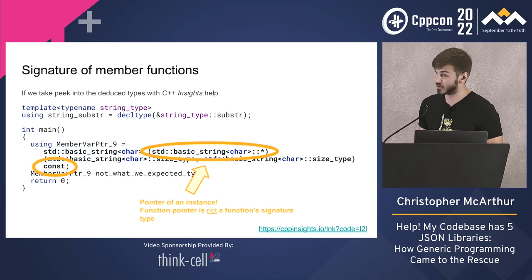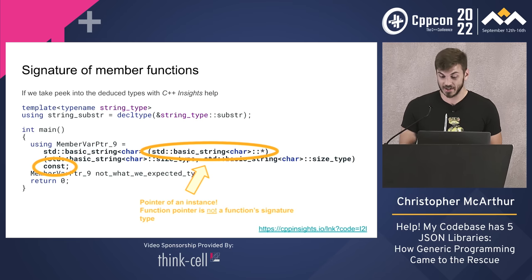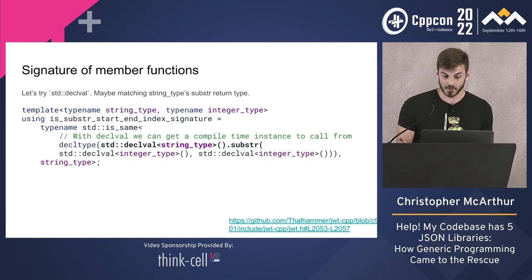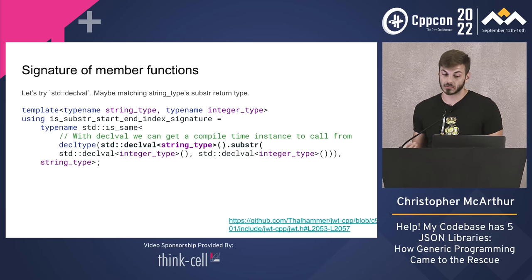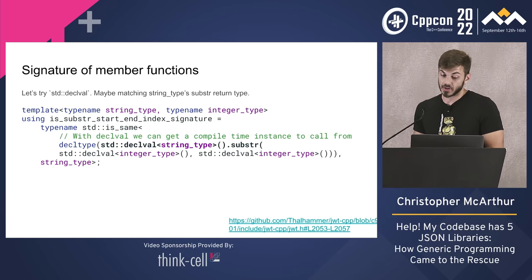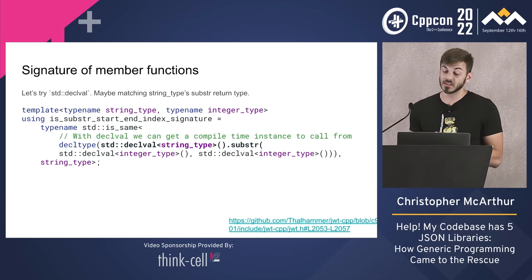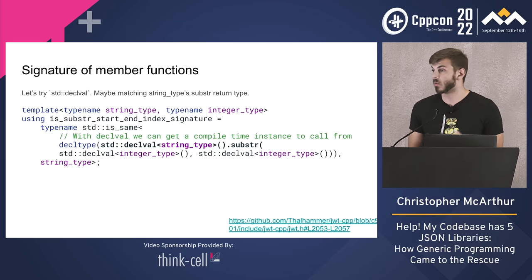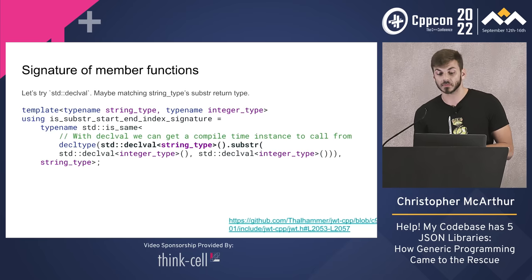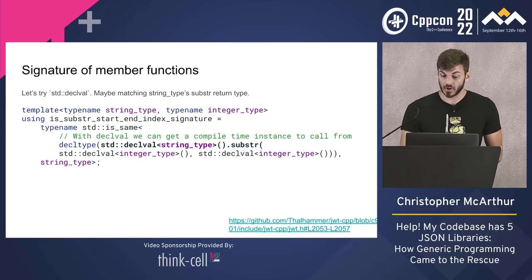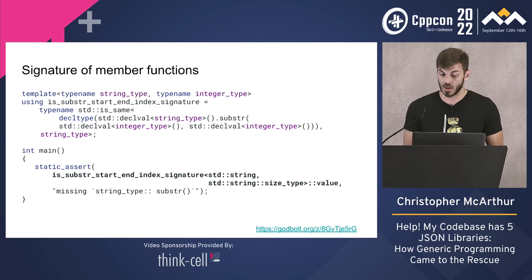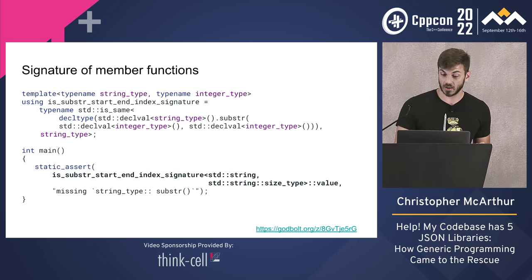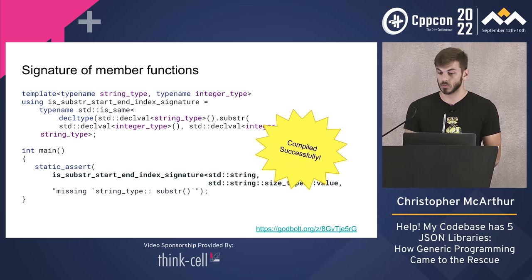And we have this weird const lingering at the end — where does that come from? So if we try this again, instead using declval with string_type::substr and passing instances of integer type — one of the types that the JSON traits would expose — we're going to get a call at compile time to that specific instance of that function. If we stick it in and compile, it compiles successfully!